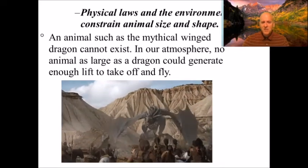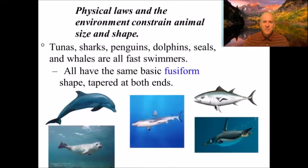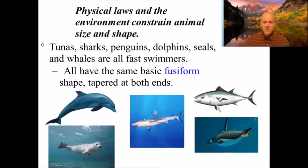Here's another example: tunas, sharks, penguins, dolphins, seals, and whales are all fast swimmers and they all have the same basic shape — fusiform, tapered at both ends. Dolphins and sharks are a fish and a mammal, very far apart evolutionarily, yet they have very similar shapes. There's also an ichthyosaur, a prehistoric reptile that looked almost exactly like a dolphin — not because they're related, but because that shape works really well in the water.